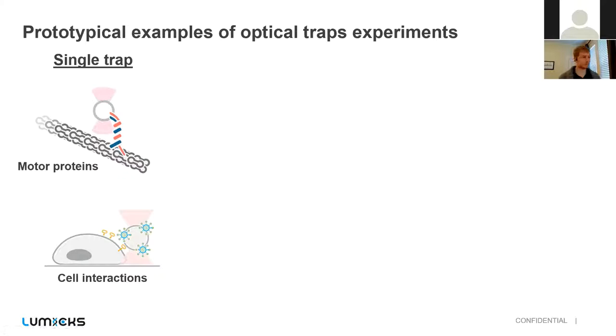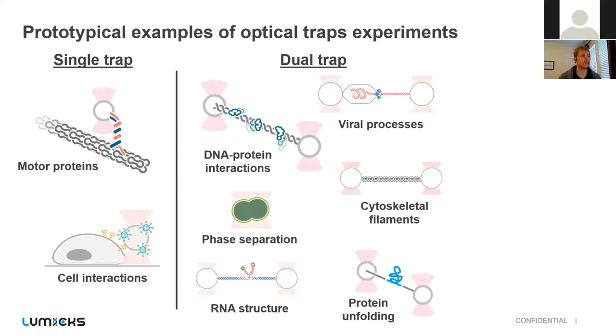If we look at a slightly more complex setup where you have two traps, you can very easily study things like DNA protein interactions where you tether a piece of DNA between two beads. You can look at things like viral packaging if you conjugate a viral capsid into one bead. You can also probe the mechanics of cytoskeletal filaments by creating a cytoskeletal fiber or even just an individual molecule between two beads. Like I said, you can study phase separation or the fusion of protein droplets. You can look at things like protein unfolding or even RNA structure, which you can then relate if you have fluorophores to conformational changes.